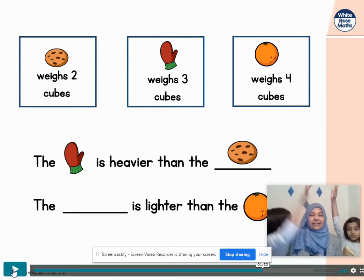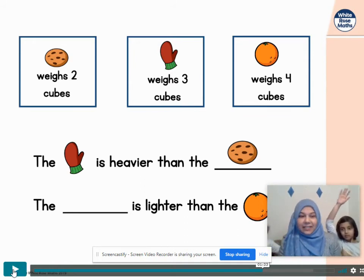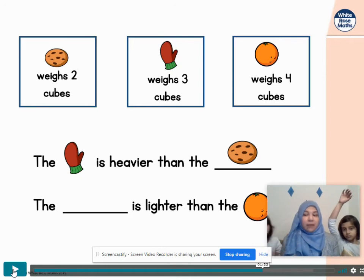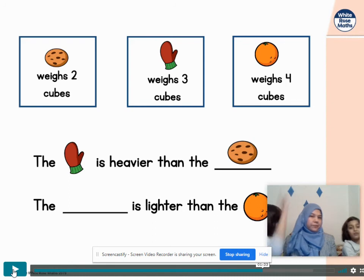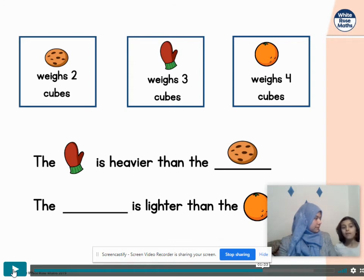Could you complete this sentence? Can you complete this sentence now? It says, listen to the sentence first. The something is lighter than the orange. So what's lighter than the orange? What could go in this one, Shafia? There are two things that are lighter than the orange, but the lightest one than the mitten and the orange is the cookie. So I'm going to go with the cookie is lighter than the orange. Okay. Is there anything else lighter than the orange?